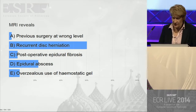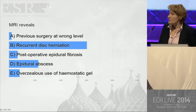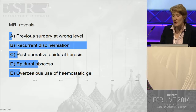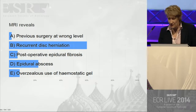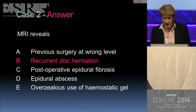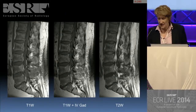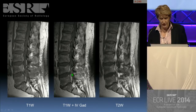The answer is it's recurrent disc herniation. The majority of people got that, but there were a number querying about the possibility of an epidural abscess. I think I probably gave the game away a tiny bit in the initial presentation, showing that this confirms the level at the L4-L5 level.